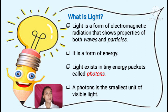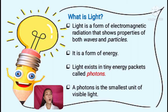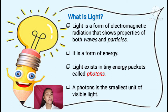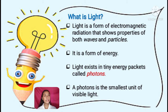Let us define what light is. Light is a form of electromagnetic radiation that shows properties of both waves and particles. It is also a form of energy. Light, or visible light, is a type of energy that makes it possible for us to see the world around us. It is a form of electromagnetic radiation of a wavelength which can be detected by the human eye. Light exists in tiny energy packets called photons — the smallest unit of visible light.